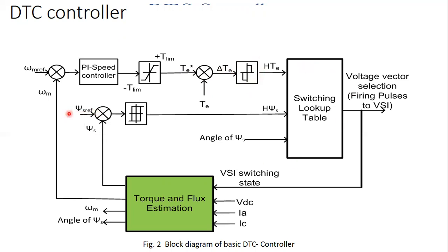The second loop is for flux. In an induction motor we keep flux constant, so the flux reference is compared with actual flux and the error is given to a two-level flux controller, outputting +1 to increase stator flux and -1 to reduce it. Additionally, the angle of the stator flux is required — its position in the 0–360 degree plane. Based on these three pieces of information, a switching lookup table selects an appropriate voltage vector, providing firing pulses to the VSI, which produces the required voltage and frequency for the induction motor.